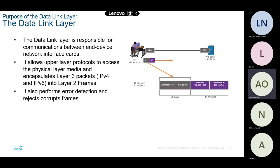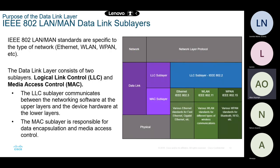The data link layer also performs error detection. Wherever any frame is being forwarded and it has some error, it will be rejected because it lacks integrity. Our devices have a level of integrity amongst them that we must always pay keen attention to.